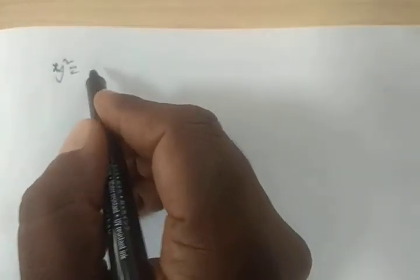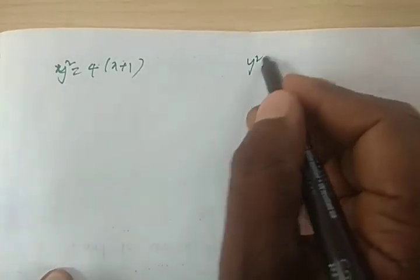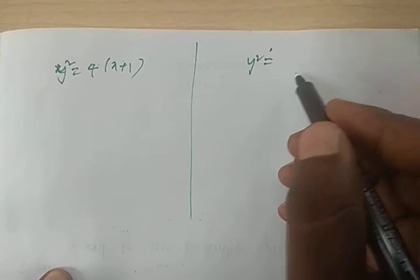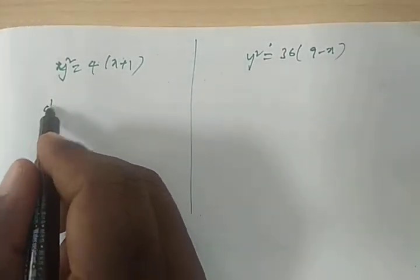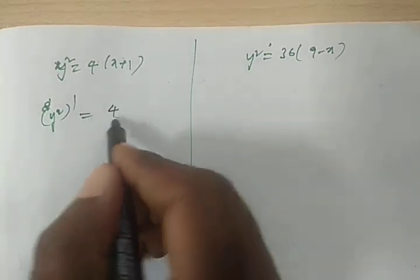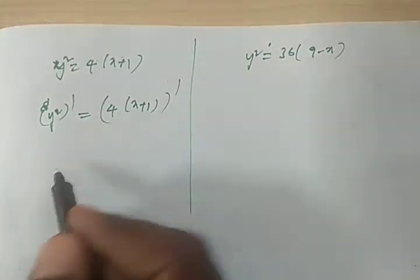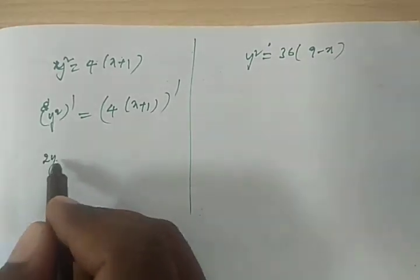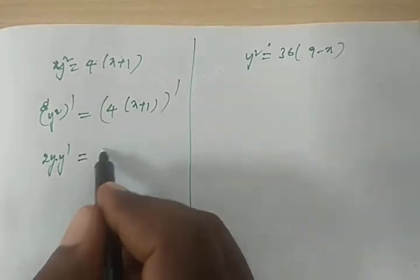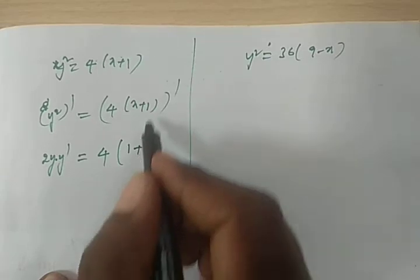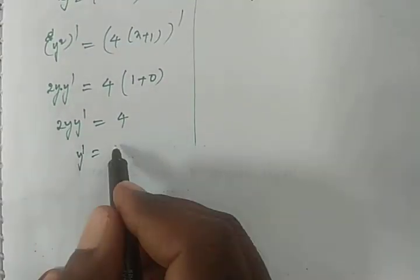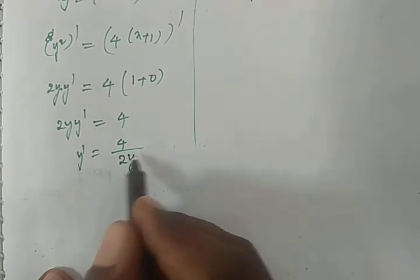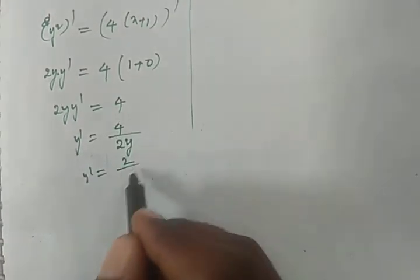The first curve is y² = 4(x+1). Differentiating both sides with respect to x: d/dx(y²) = 4·d/dx(x+1). So 2y·(dy/dx) = 4·1 = 4, since the derivative of x is 1 and derivative of the constant 1 is 0. Therefore dy/dx = 4/(2y) = 2/y.